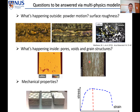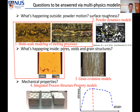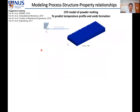The questions we want to answer through multi-physics modeling are: what's happening outside, like powder motions and surface roughness; what's happening inside, like pores, voids, and grain structures; and what are the mechanical properties. We developed a series of models including multi-scale modeling of the melting process, powder dynamics models, grain evolution models, and integrated process-structure-property models — all linked together into a modeling framework.